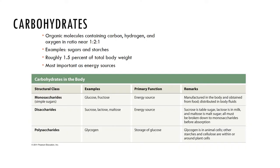Carbohydrates contain carbon, hydrogen, and oxygen in a unique ratio of 1:2:1. There are three classes: monosaccharides, disaccharides, and polysaccharides. The function of carbohydrates is usually as a major fuel source for cells in the form of glucose. They can also form structural molecules like the ribose sugar found in RNA.